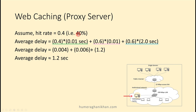Assume a cache hit rate of 40% (0.4). This means that 40% of the objects requested by hosts will be found in and fulfilled by the cache, while the remaining 60% of requests must go all the way to the web server. There are three delay components: LAN delay, access delay, and internet delay.